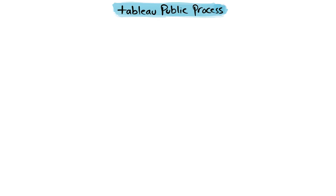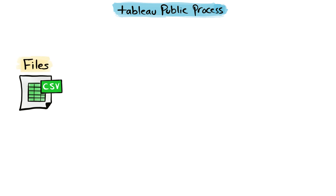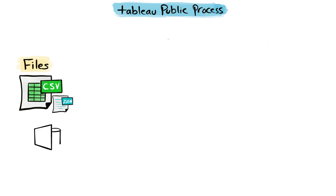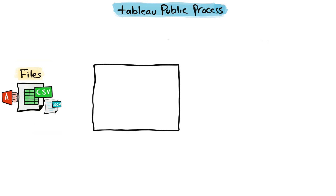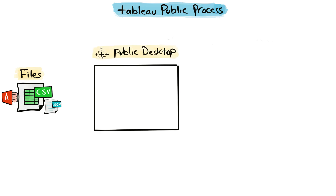Let's start with the source of our data. In Tableau Public, you can only connect to files like CSV, JSON, Microsoft Access, and Google Sheets. The next component is Tableau Public Desktop — it is the free version of Tableau Desktop, software that you can download and install on your PC. Here we start by connecting Tableau Public to our files.